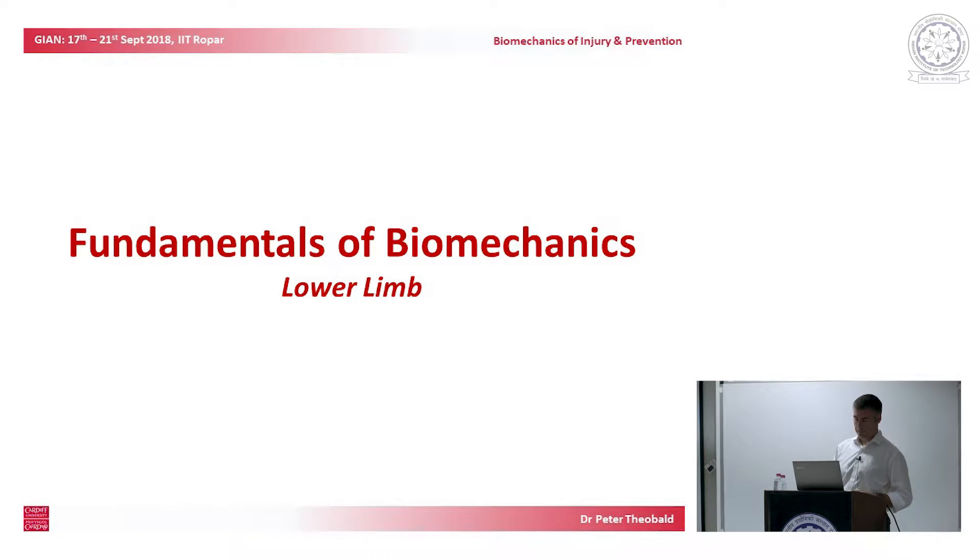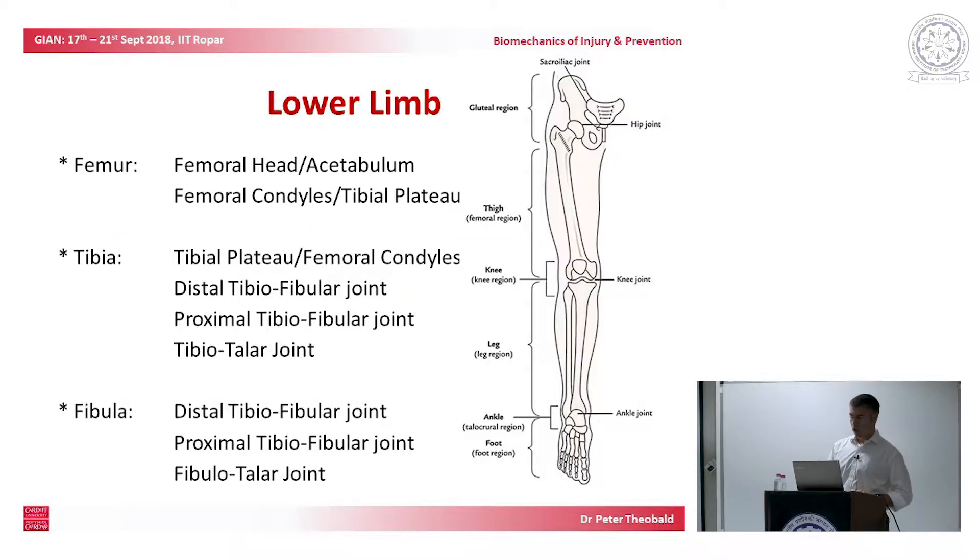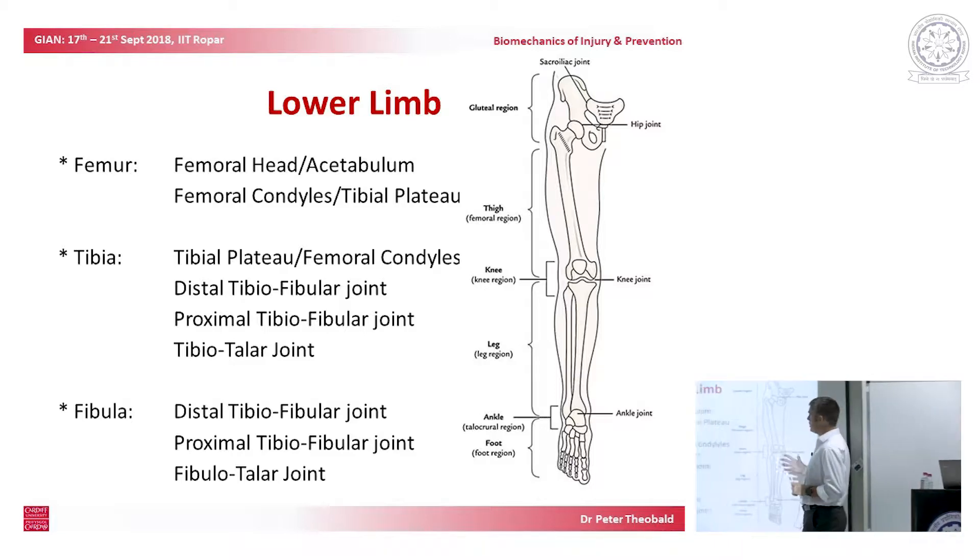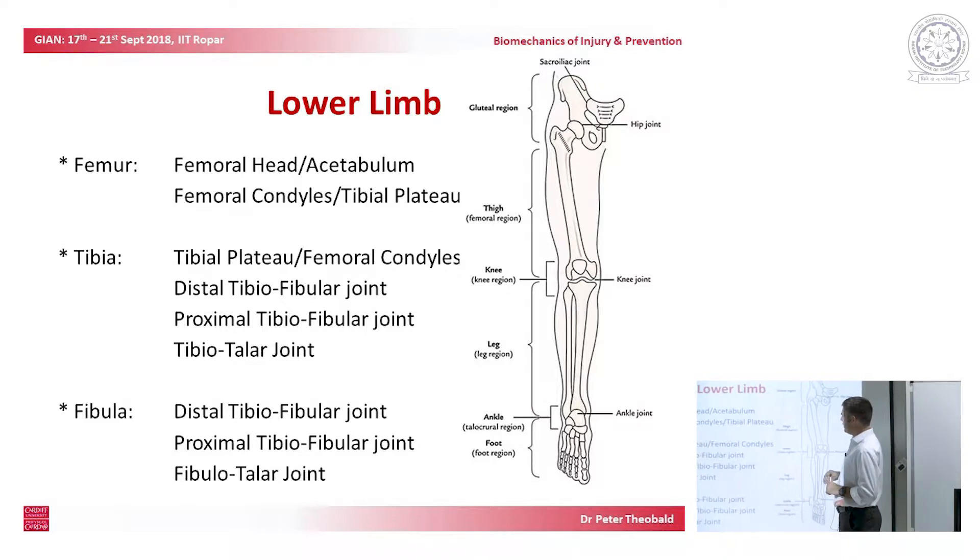This is the next session of biomechanics of injury and prevention. We are looking today, this afternoon, at the head, neck, and spine, and also the upper limb, but this morning looking at the lower limb. Thanks to Jeanne and Dr. Jachendra for making all this happen. The lower limb, most of which we've described in detail, we'll look at in greater detail this morning.